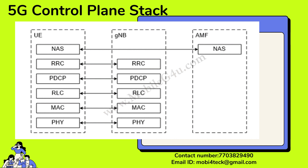As you can see in this diagram, we have UE, gNodeB, and AMF. This is our UE protocol stack, this is our gNodeB protocol stack, and this is AMF. Inside the UE we have Physical, MAC, RLC, PDCP, RRC, and NAS — all six layers are present in UE. In the gNodeB we have Physical, MAC, RLC, PDCP, and RRC — there is no NAS layer in gNodeB.